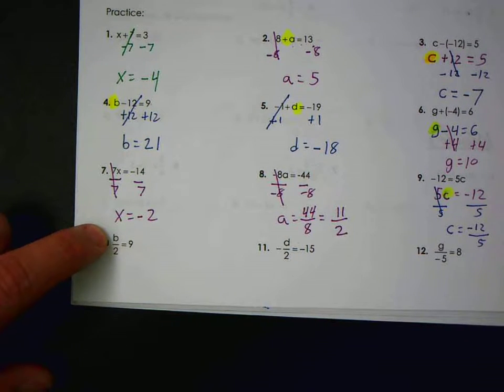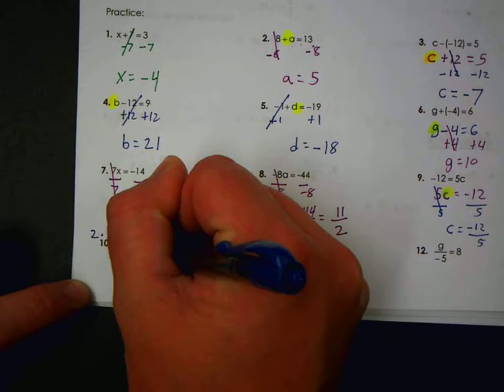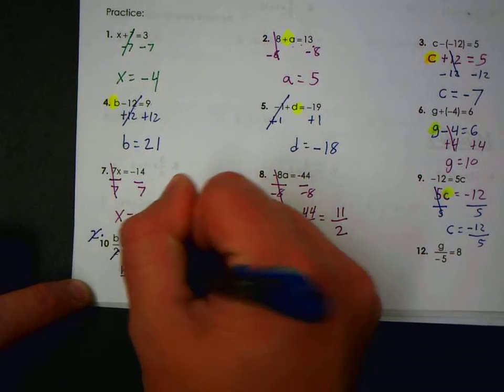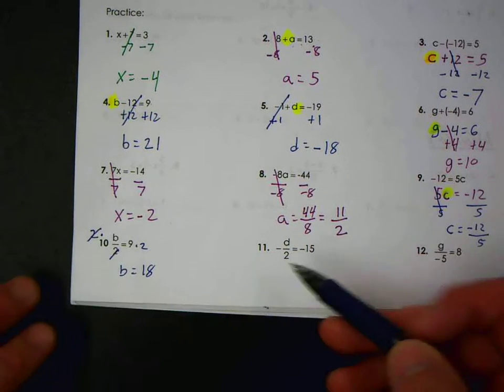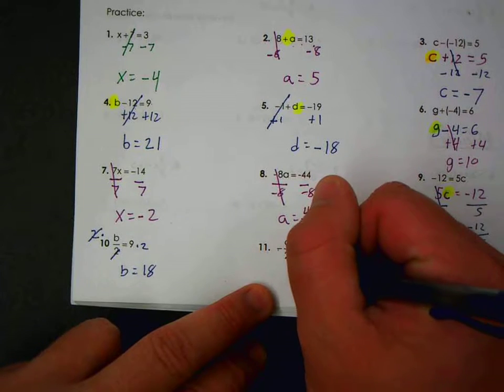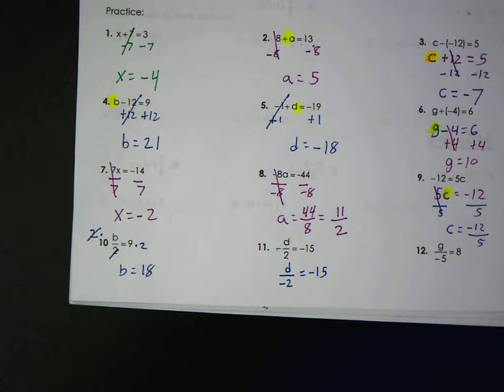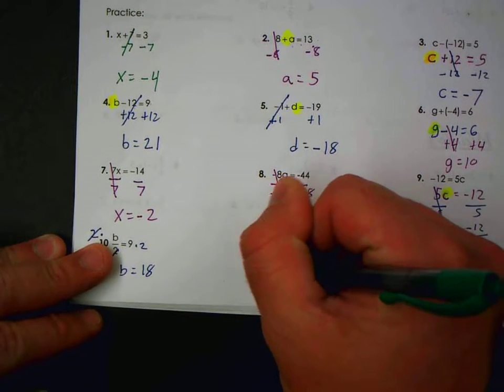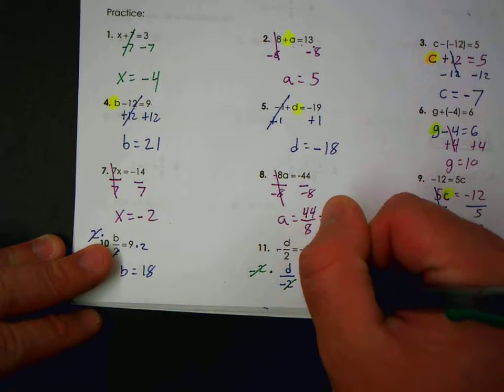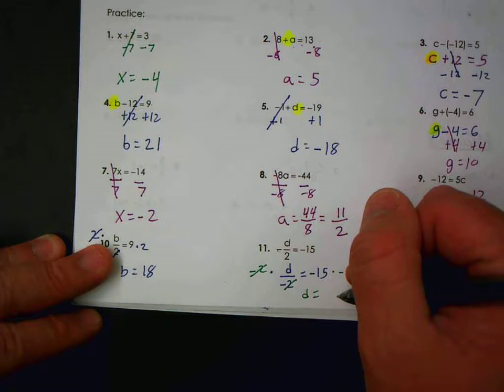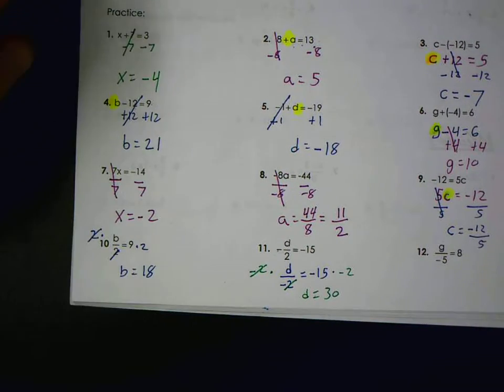The fraction means division. So this says what number is divided by two to get nine. So I'm going to multiply by two, and I get b as nine times two, eighteen. Here, the negative sign could be on the numerator or the two. So I could, if I wanted to, I could write this as d over negative two. Because I'm trying to get the d by itself, I'm multiplying. Those cancel. D equals negative fifteen times negative two is thirty.